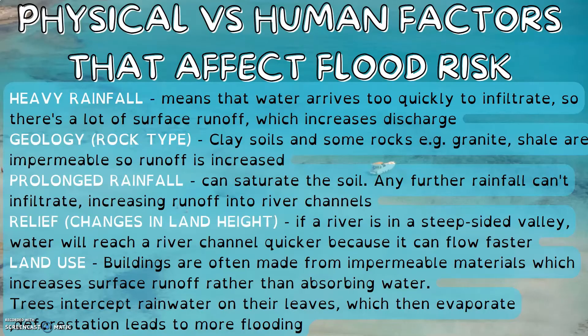Relief: if a river is in a steep-sided valley, water will reach a river channel much quicker because it can flow faster. Land use: buildings are often made from impermeable materials, which increase surface runoff rather than absorbing water. Trees intercept rainwater on their leaves, which then evaporates; however, deforestation leads to more flooding.